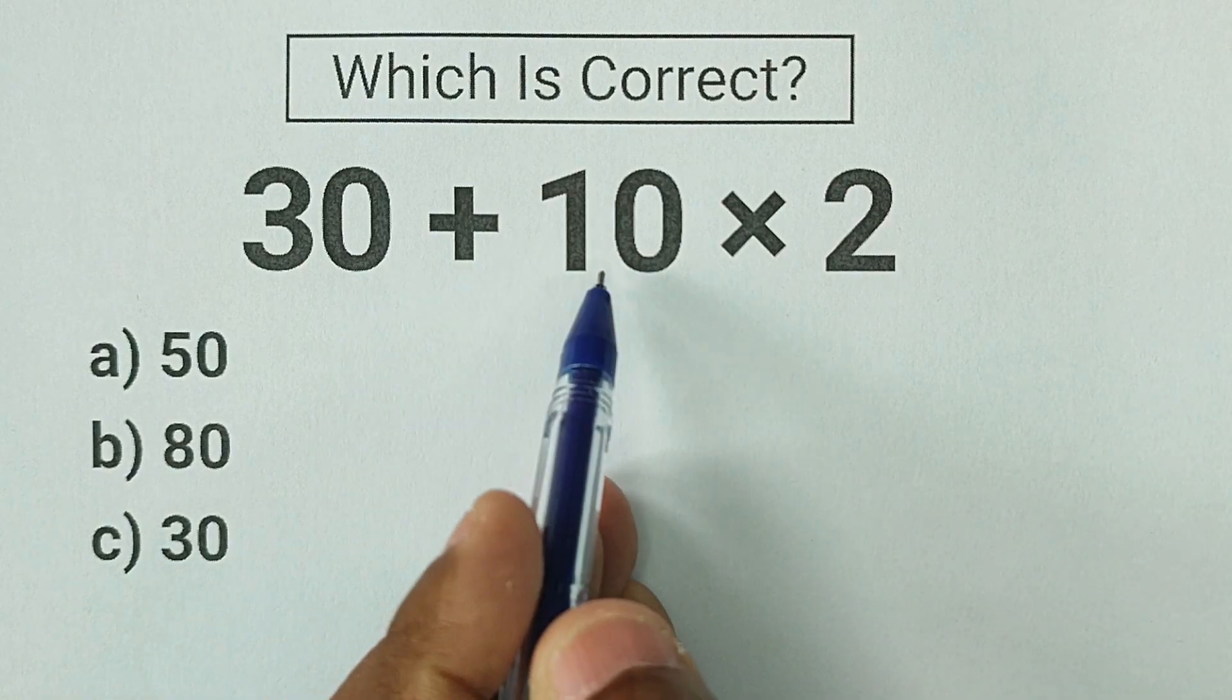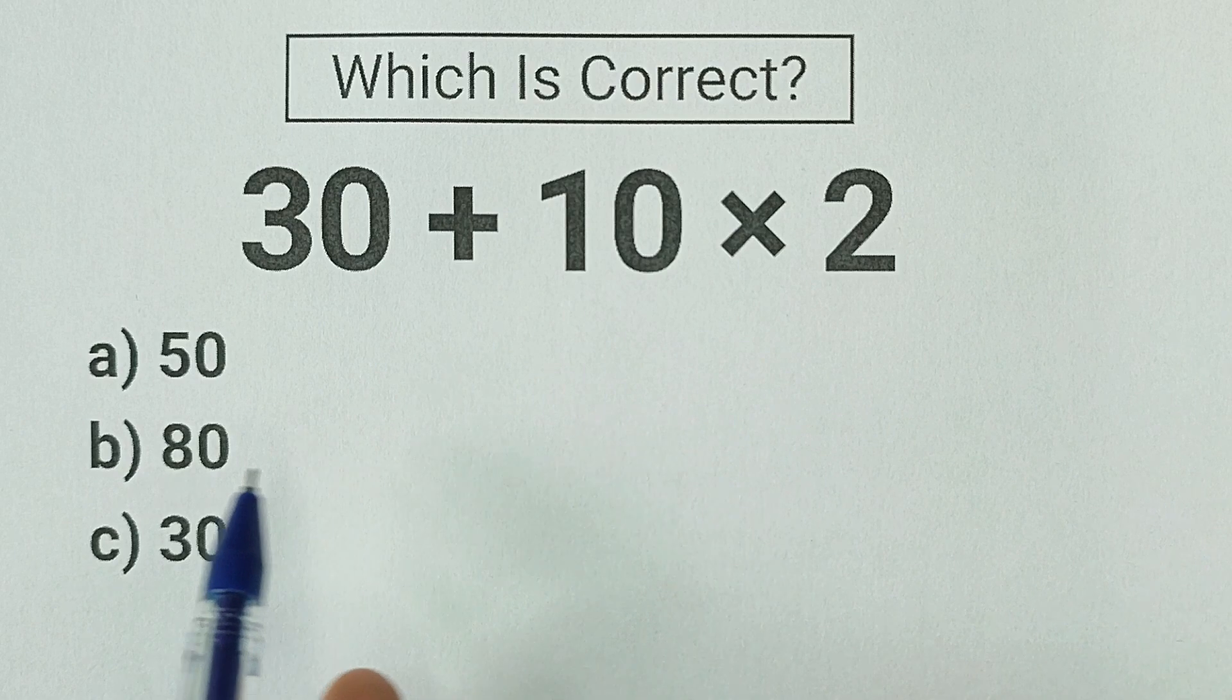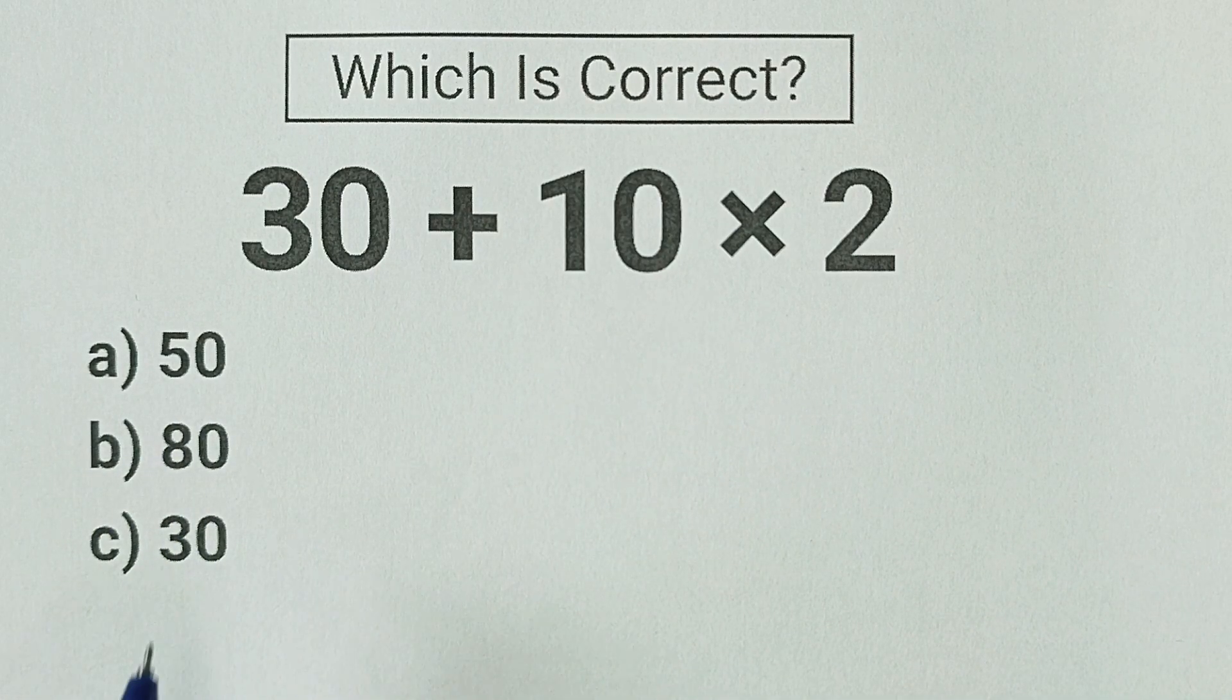Okay, here we have 30 plus 10 multiplied by 2, which is the correct answer. There are three options: option A 50, option B 80, and option C 30.